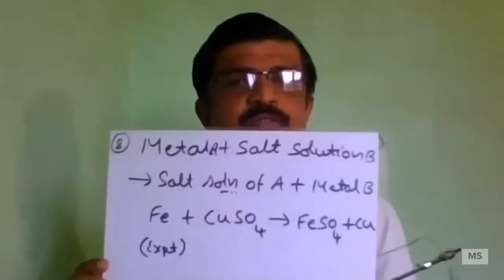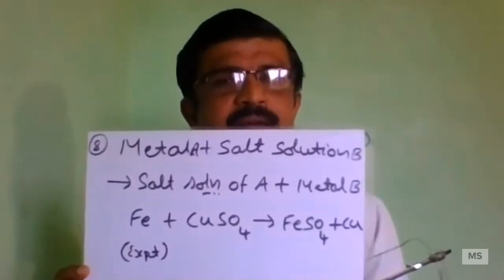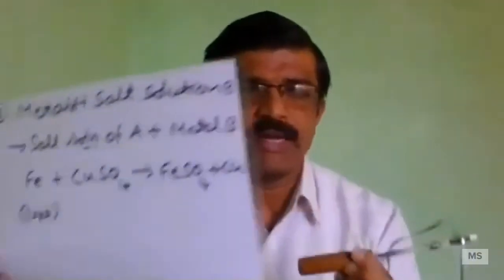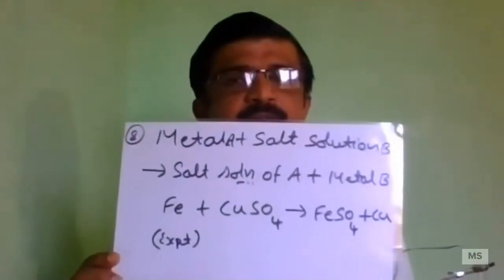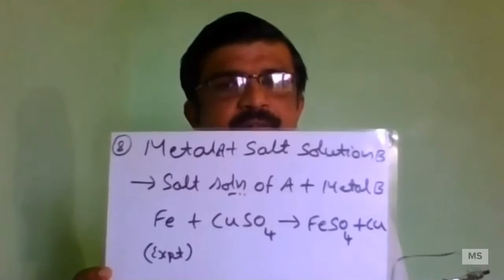What I have done is I took a test tube. In the test tube, I added copper sulfate solution — that is salt solution of B. Metal A is iron. Fe plus CuSO₄ gives rise to FeSO₄ plus Cu.